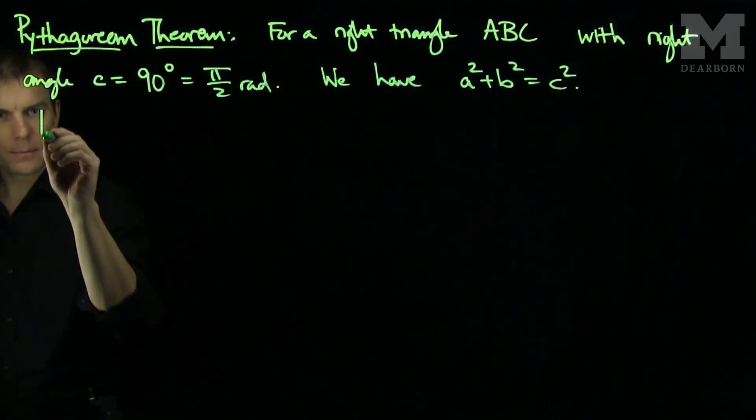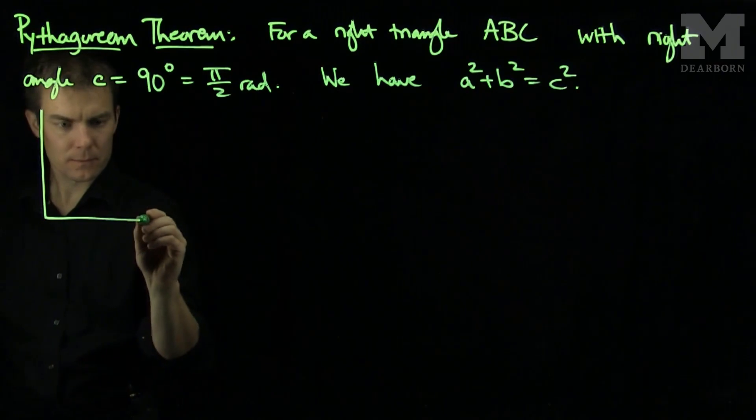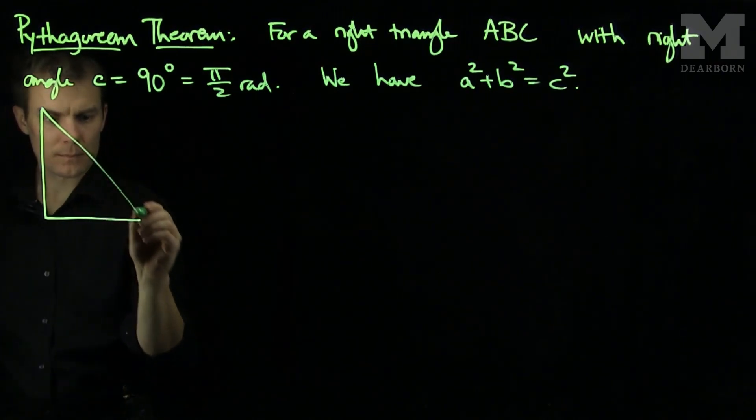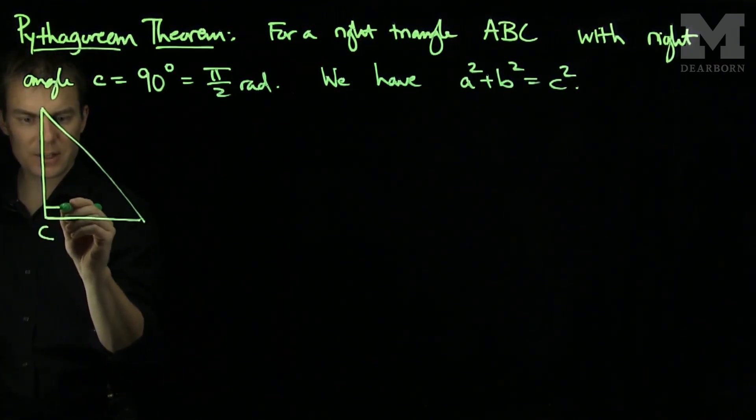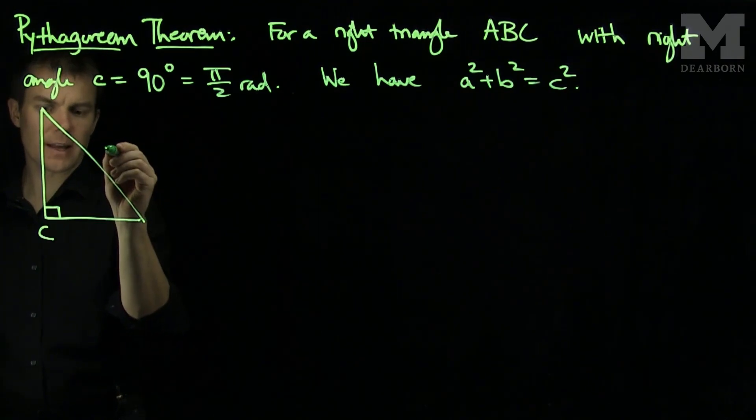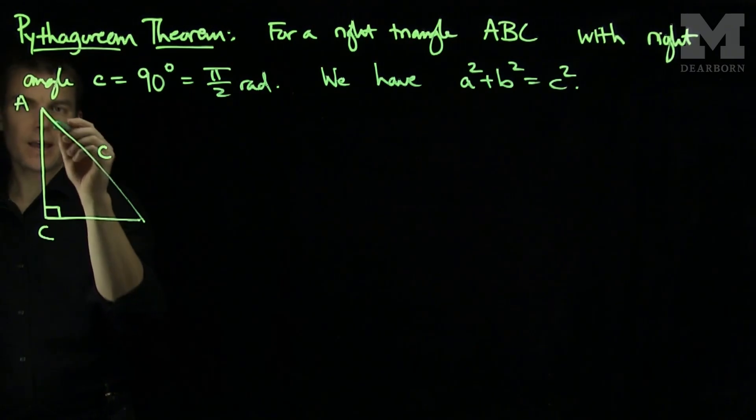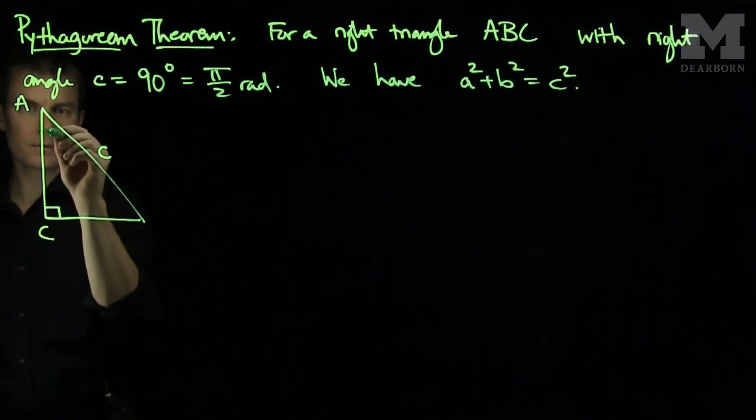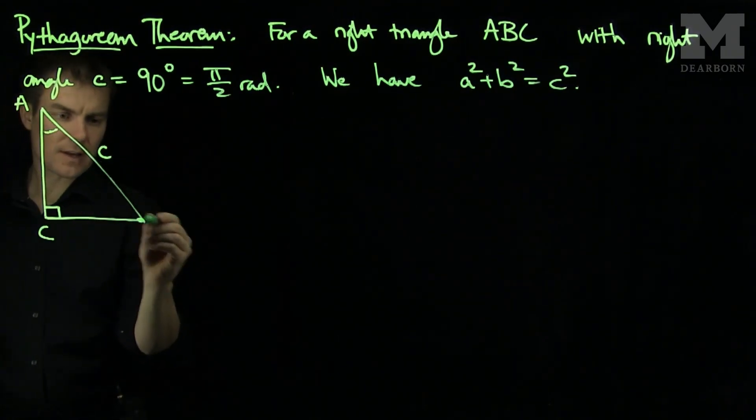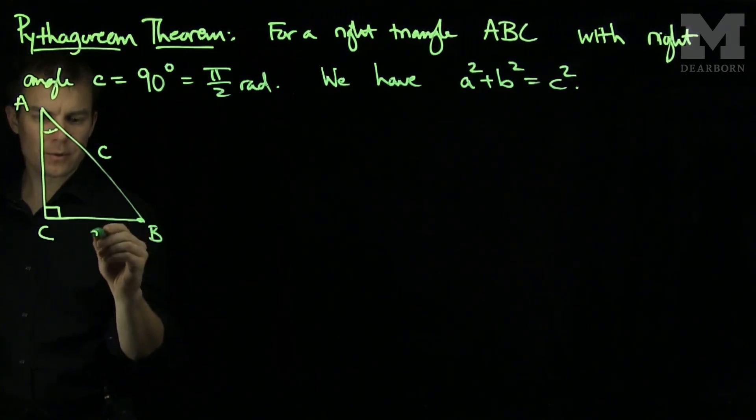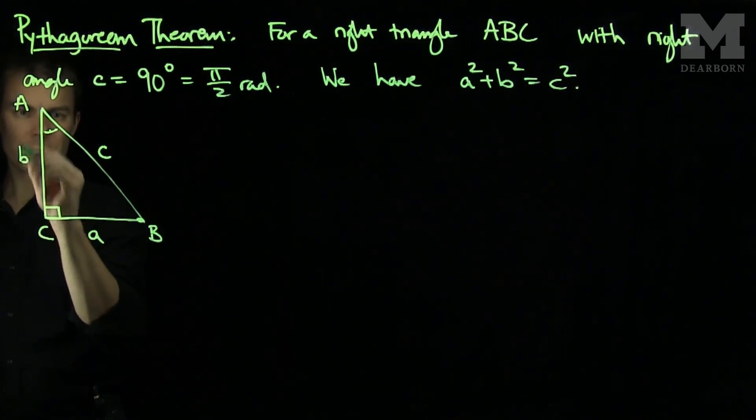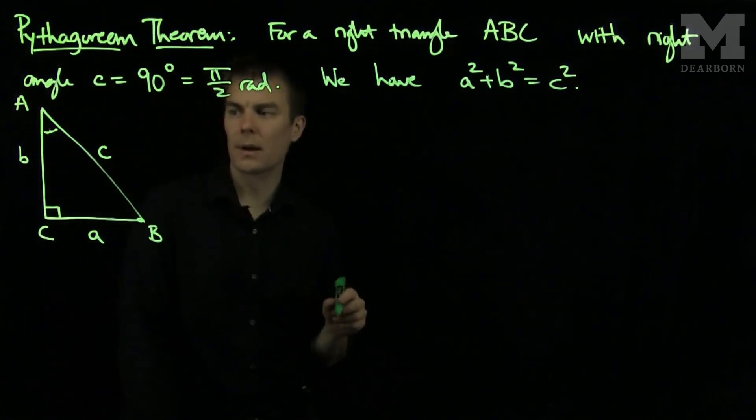So if I have a triangle, here's my c. My c is my right angle, and this is my side length c over here. And I will have a side a and an angle over here, and I will have a side b. So this will be my length a, and this will be my length b.